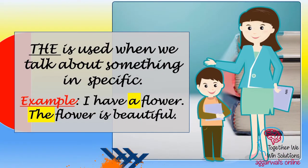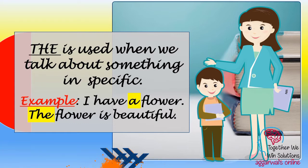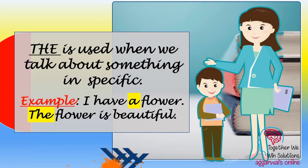Article 'the' is used when we talk about something specifically. You know about article 'a', which is used when we discuss about something generally. It is easy to memorize that article 'the' is used when we talk about a particular noun — it is just the opposite of article 'a'.